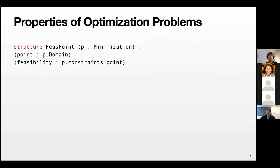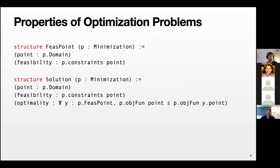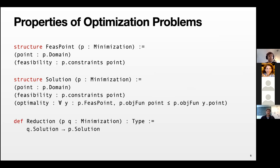With this definition in place, they can define properties of optimization problems. A feasible point is simply a point that fulfills the constraints. A solution is a feasible point with the property of optimality — the value at any other feasible point is at least as large. They can also define what a reduction is: a function from the solution space of problem Q to the solution space of problem P, so that any solution of Q yields a solution for P.